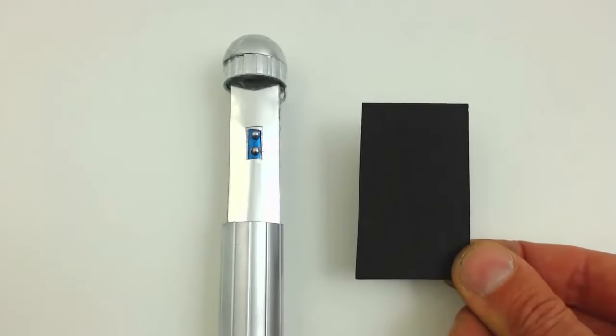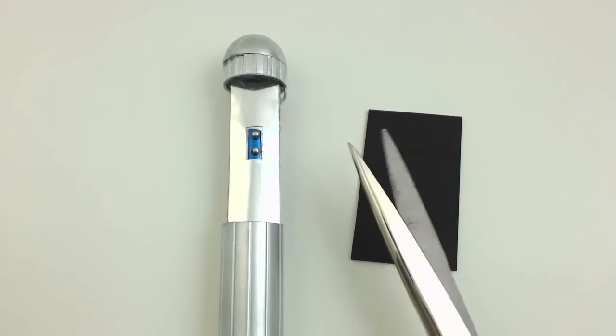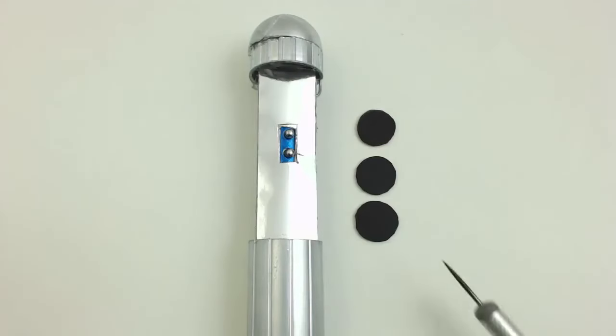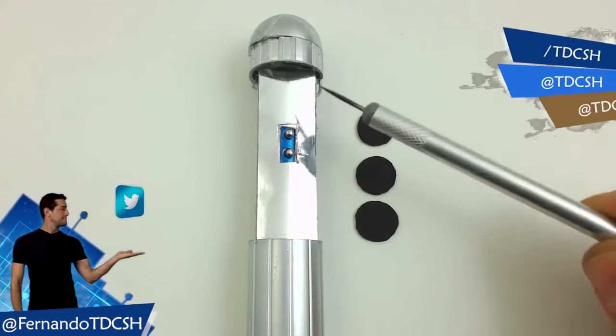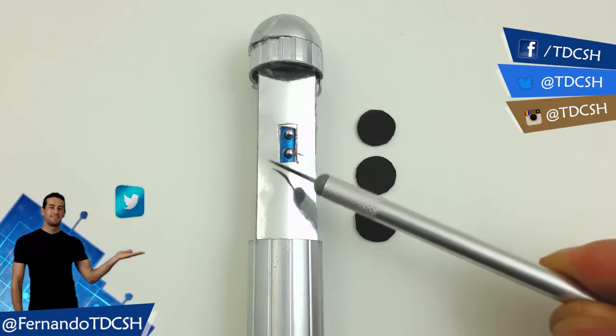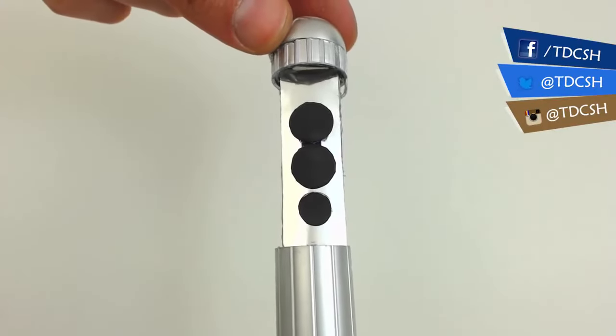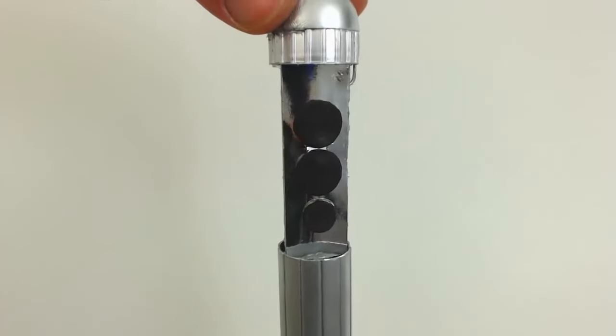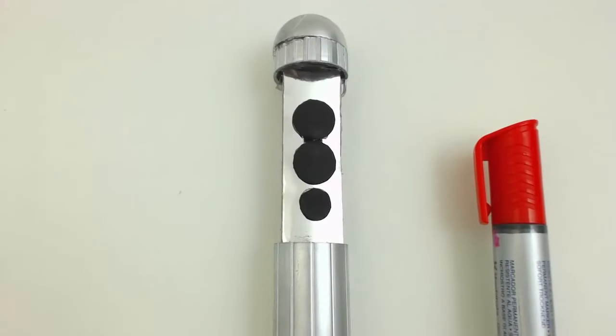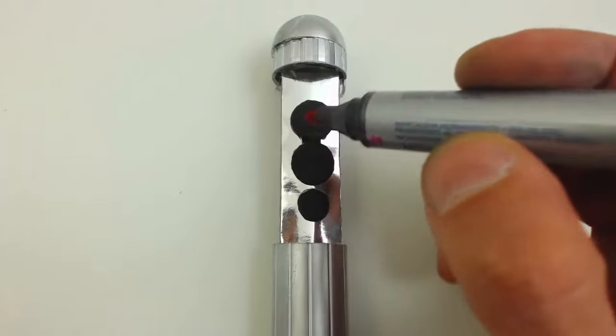To make it look more real, we will cut three circles of black foam. These will be placed throughout this part, hiding attachments. And to finish, we put a red dot on each one. Now we have finished this project.